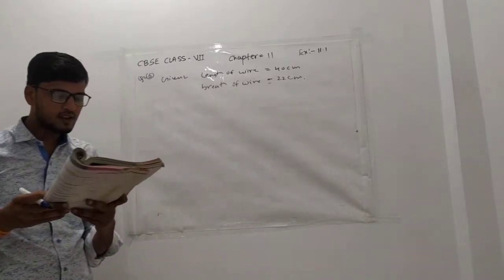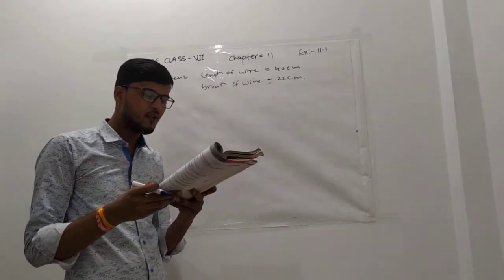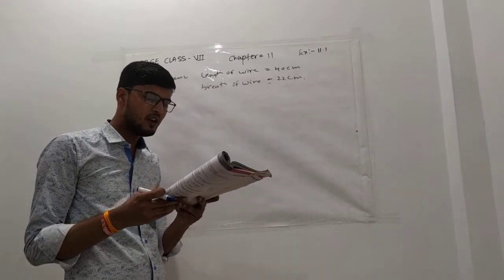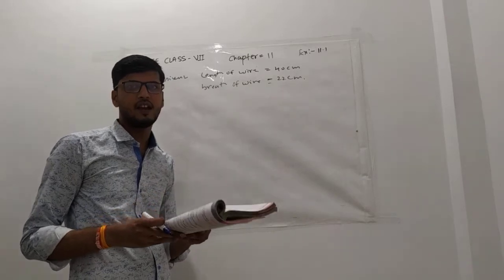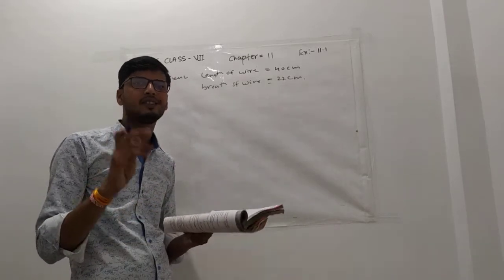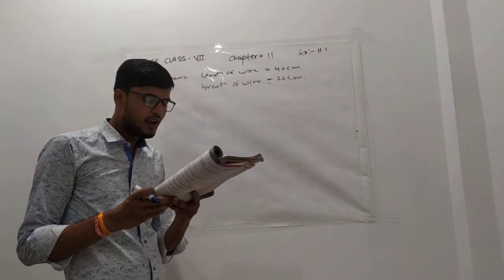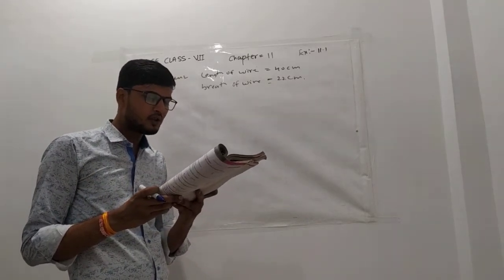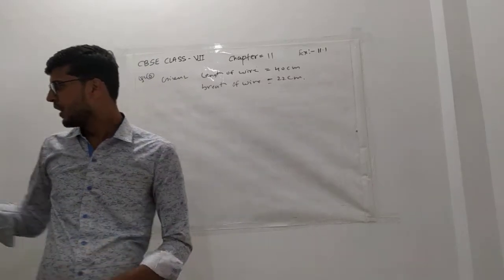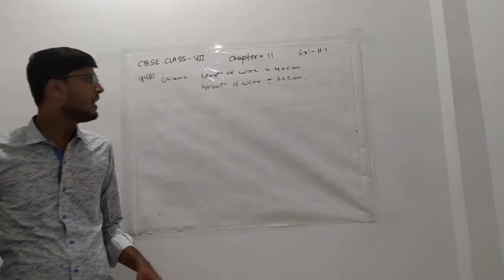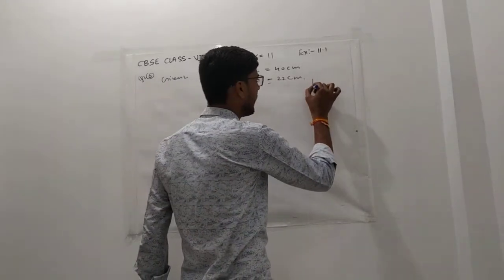If the wire is bent into the shape of a square, what will be the measure of its side? You will find the square side. Also find which shape includes more area. So the wire is now in the shape of a square.